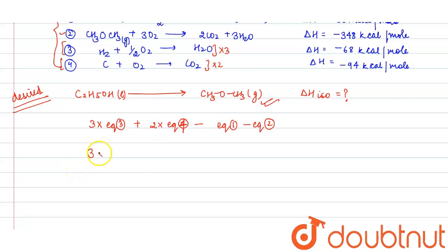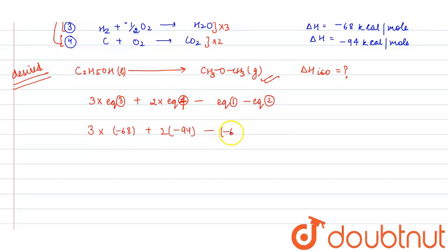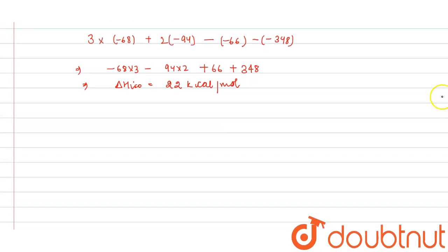So it will be equals to 3 into minus 68 plus 2 into minus 94 minus equation 1 enthalpy is minus 66 minus minus 348. So it will be minus 68 into 3 minus 94 into 2 plus 66 plus 348. So after solving, you will get delta H of isomerization which will be equals to 22 kilocalorie per mole. This is your delta H of isomerization.